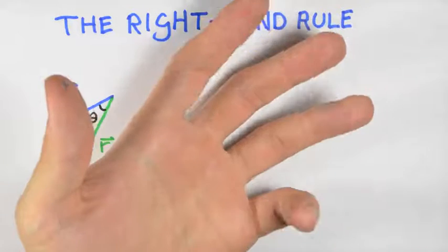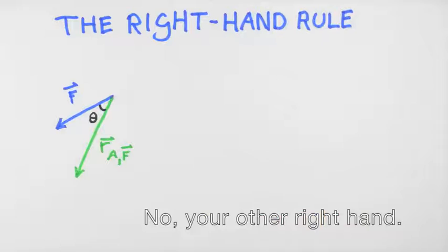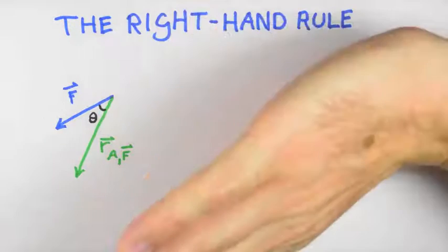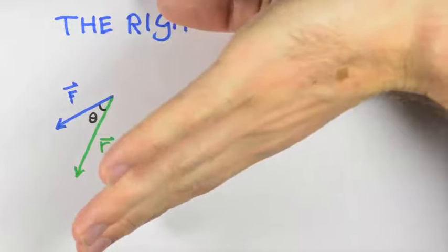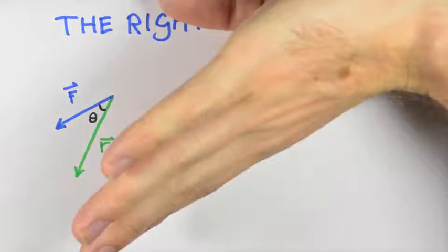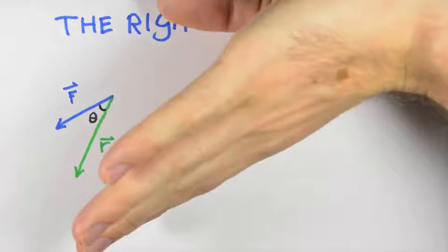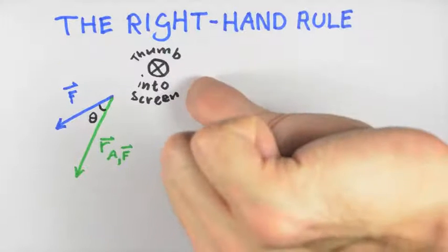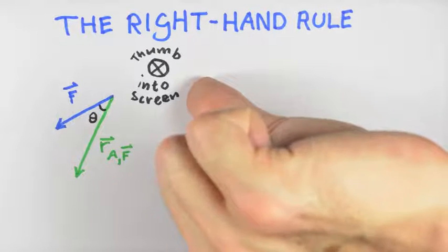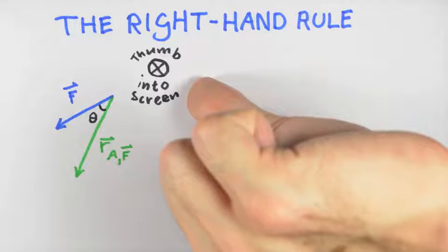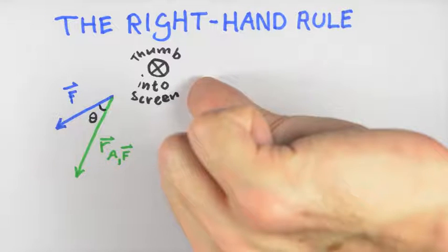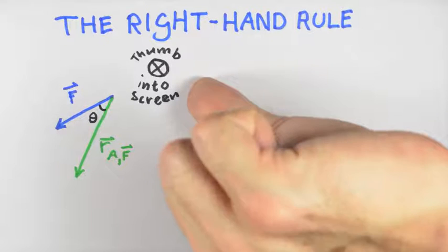First take your right hand with your fingers straight and align your right hand in the direction of the arrow representing r sub a F. Now keeping your fingers straight, orient your palm so that it faces the arrow representing F. You may need to rotate your wrist to do this, but make sure you keep your fingers straight and pointing along the direction of r sub a F. Now curl your fingers into a fist while keeping the rest of your hand motionless. Finally, stick your thumb straight out from your hand without moving any other part of your hand. The direction your thumb points is the direction of the torque vector. In this particular case, we see that the direction of the torque is into the screen away from us.